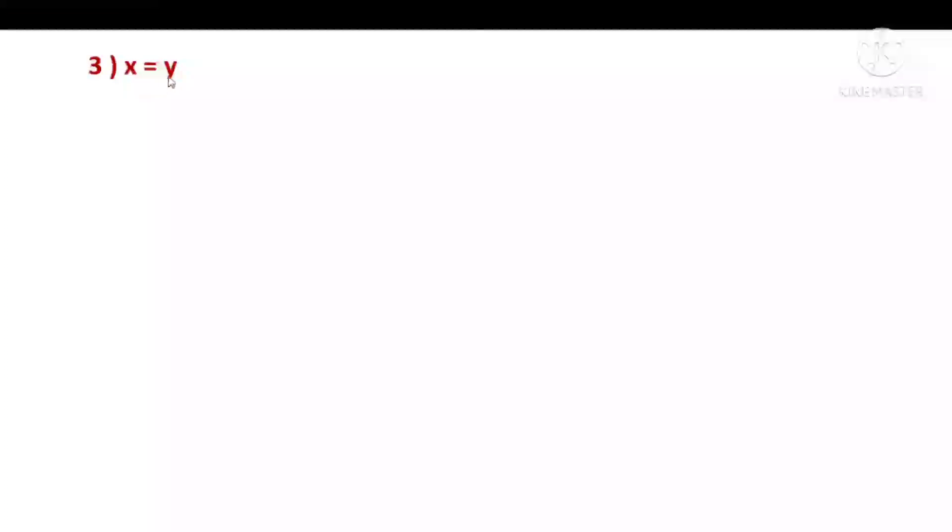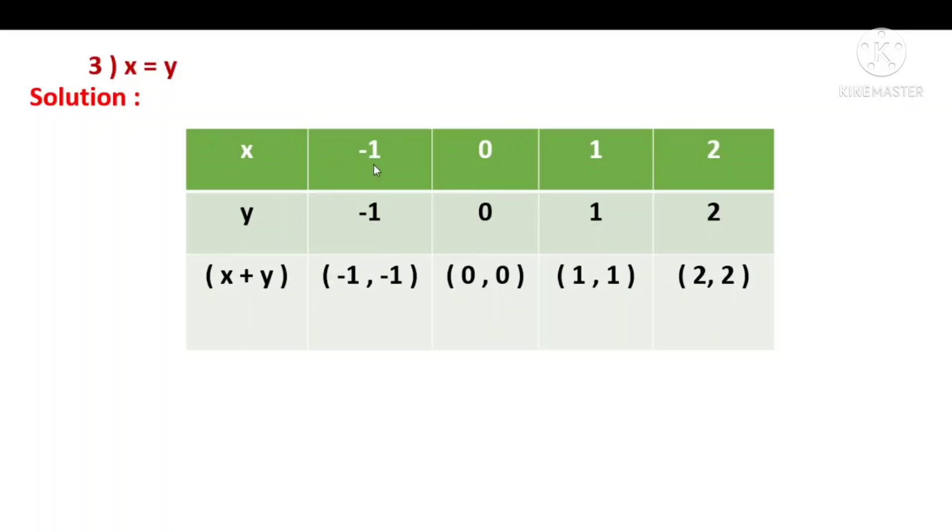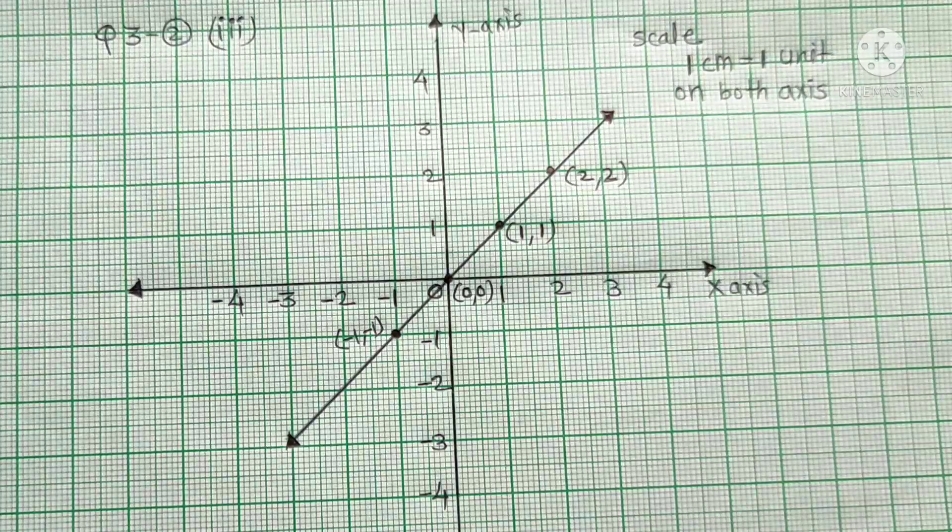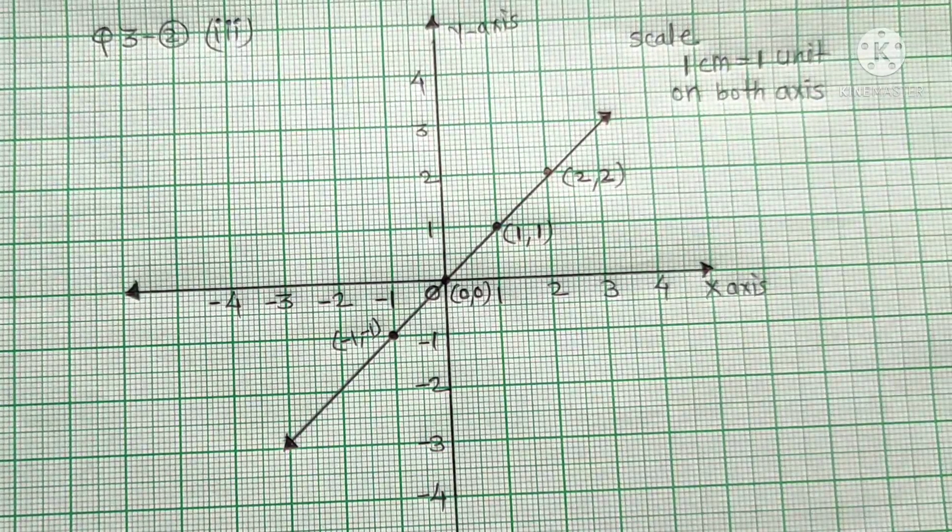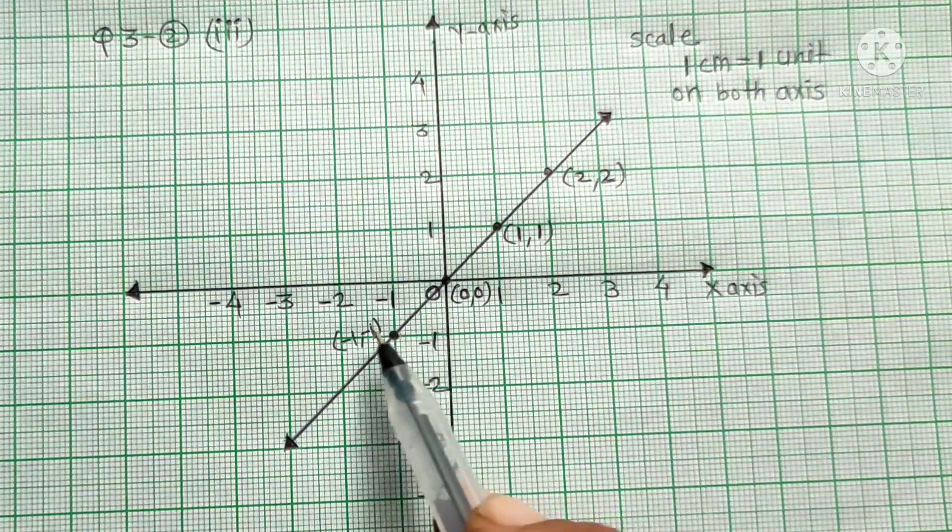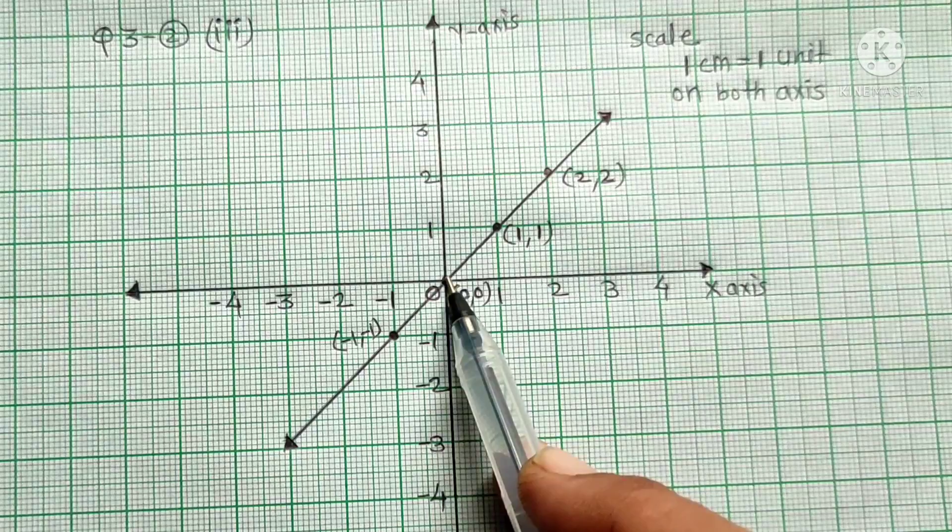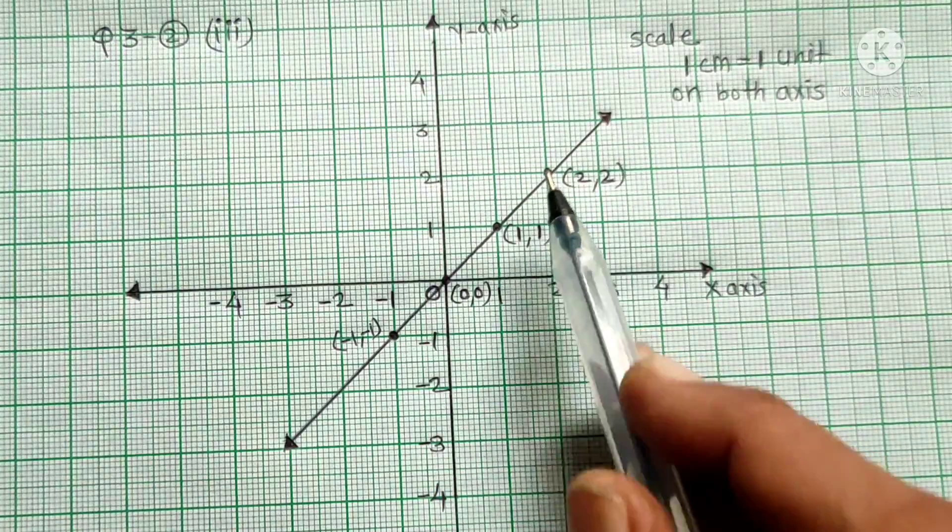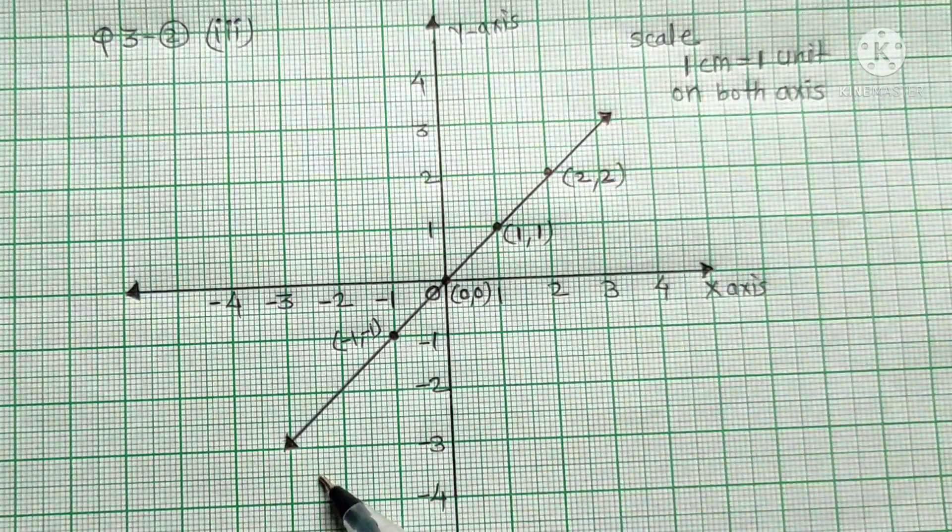Equation 3. x is equal to y. Solve and find values. x is equal to y gives points 0 comma 0, 1 comma 1, 2 comma 2. Plot these points and draw the line.